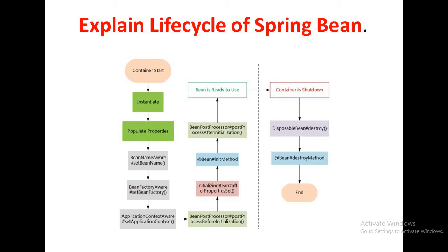Whenever the Spring Bean container starts — meaning our application context starts — it will instantiate the Bean and then populate all the properties. It calls setBeanName and setBeanFactory afterwards. Then it calls setApplicationContext, which returns an ApplicationContextAware interface instance. Then BeanPostProcessor calls the postProcessBeforeInitialization method. Here the Bean gets initialized, and then the afterPropertiesSet method gets called. After that, the custom init method of the Bean gets called. Then BeanPostProcessor's postProcessAfterInitialization gets called, and here the Bean gets ready to use.